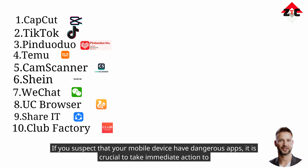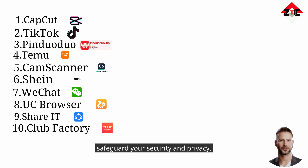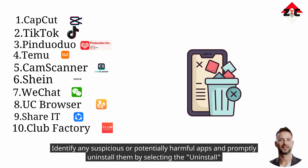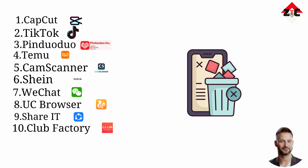If you suspect that your mobile device has dangerous apps, it is crucial to take immediate action to safeguard your security and privacy. Navigate to your device's settings, find the Apps or Applications section, and carefully review the list of installed apps. Identify any suspicious or potentially harmful apps and promptly uninstall them by selecting the uninstall option.